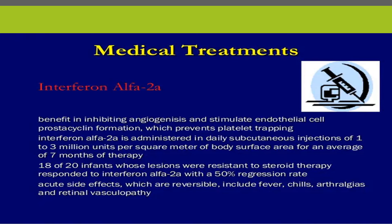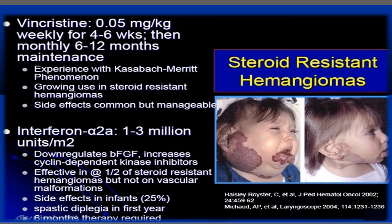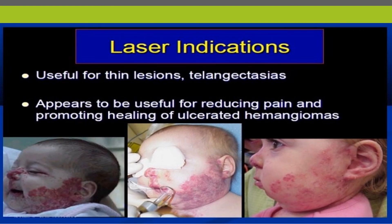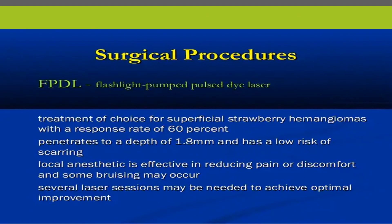For steroid-resistant hemangiomas, in addition to interferon alpha-2, vincristine can be given at 0.05 mg per kg weekly for four to six weeks and then monthly for six to twelve months. Laser treatment is indicated for thin lesions and telangiectatic areas, and appears to be useful for reducing pain and promoting healing of ulcerative hemangiomas.